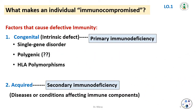What makes an individual immunocompromised? There are many factors that cause defective immunity. First, congenital factors — including single gene disorders, polygenic causes, and HLA polymorphism — cause primary immunodeficiency. Or acquired factors that cause secondary immunodeficiency through diseases or conditions affecting immune components.